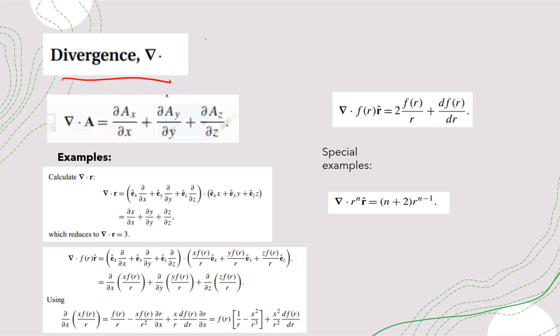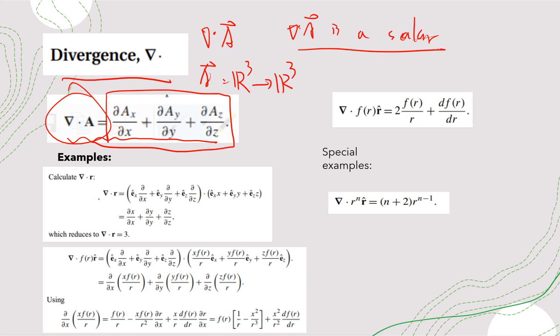Okay, the next thing is the divergence. So divergence acts on a vector, right? So A is a vector field. So A is a vector field from R3, basically R3 to R3. And the divergence A is defined to be this one: partial Ax/partial x plus partial Ay/partial y plus partial Az/partial z. So divergence A is a scalar. Okay, so for example, if someone wants to calculate the divergence of R, then this R is basically, now it's a vector. So it's x, y, z. So partial x over x is 1. Partial y partial y is 1. Partial z partial z is 1. So which reduces to divergence R equals 3.